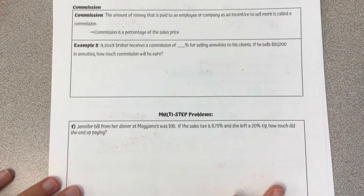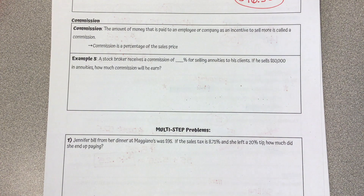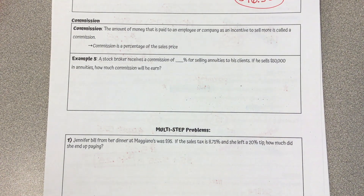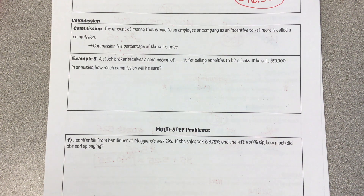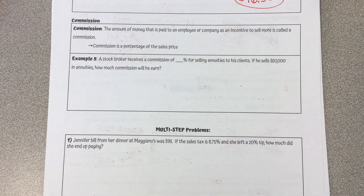The last part we're going to look at before combining these things is commission. Commission is the amount of money that is paid to an employee or company as an incentive to sell more. Commission is a percentage of the sales price. People earn commission on selling cars, shoes, or houses. If you've ever walked into a Best Buy, a lot of times they are earning commission — that's why they will come up to you immediately. They're making money off of selling something to you.